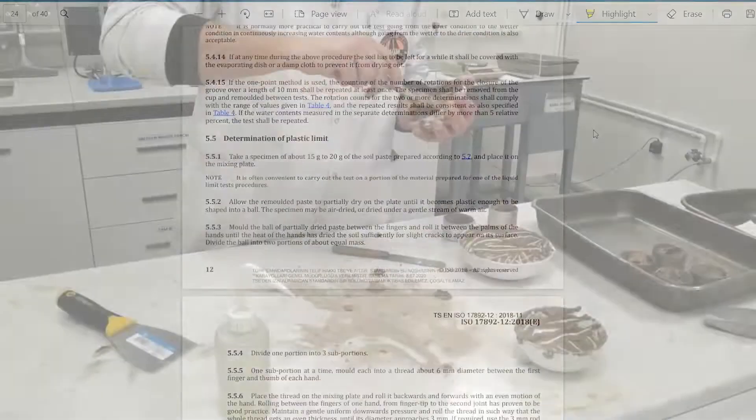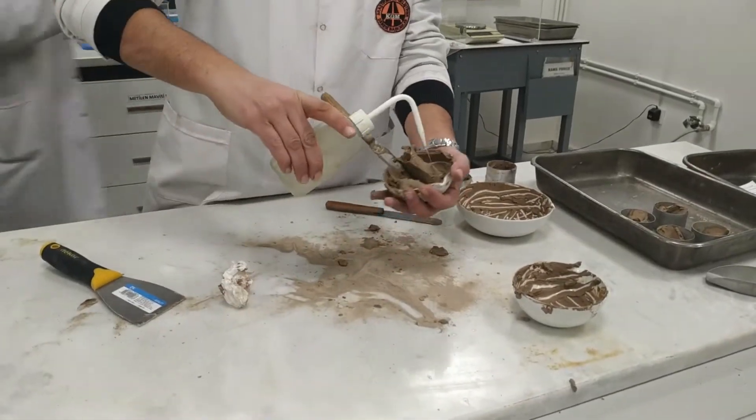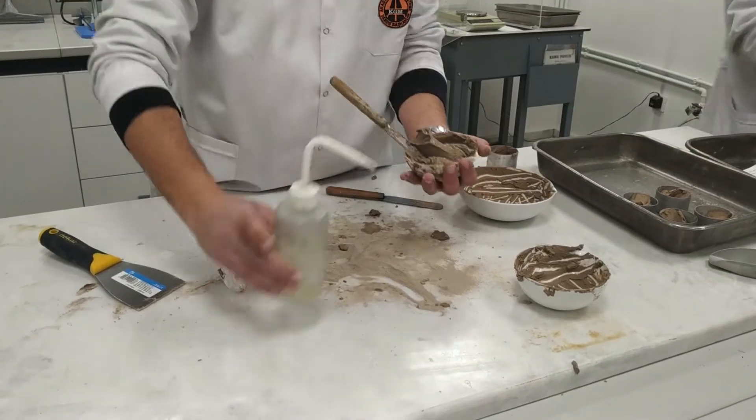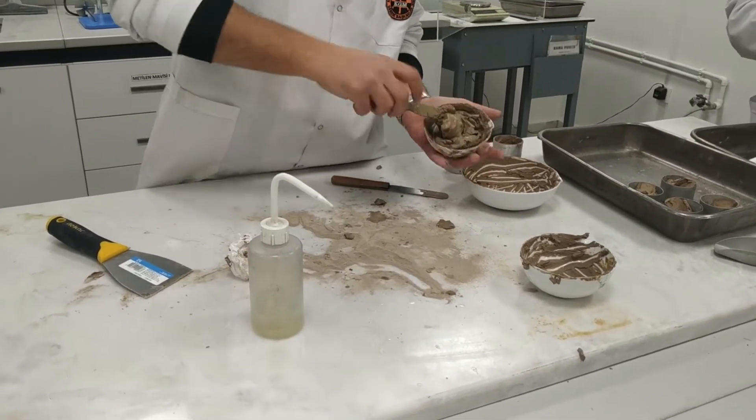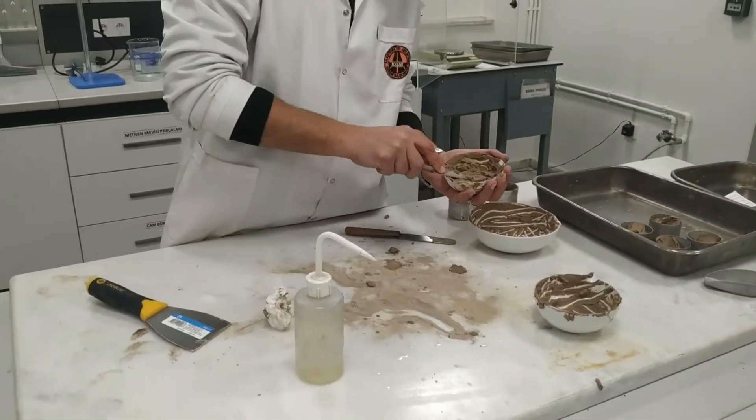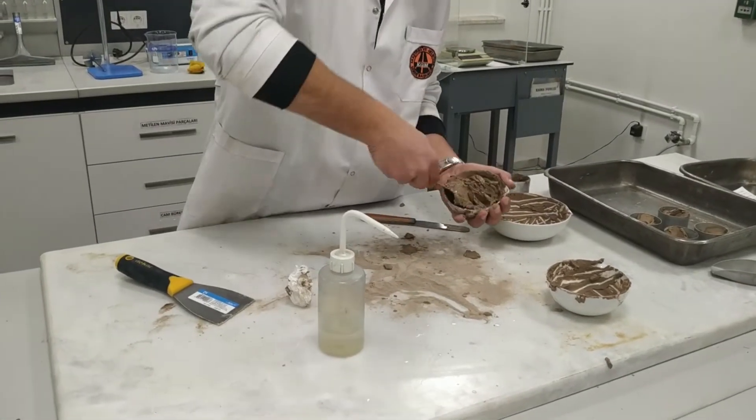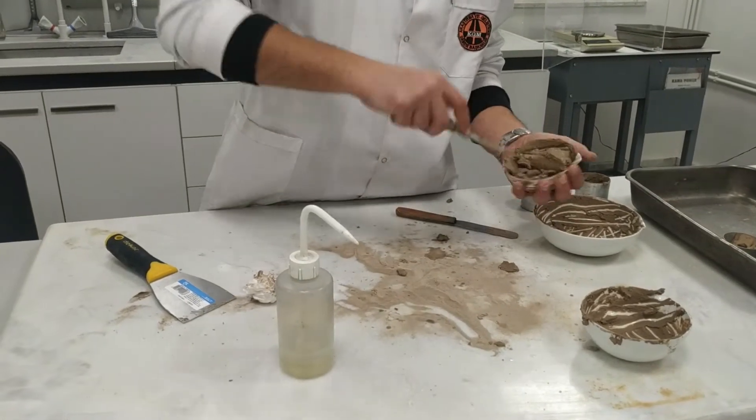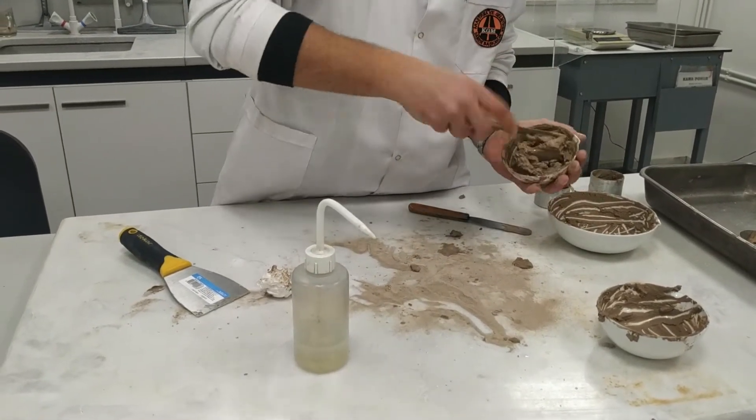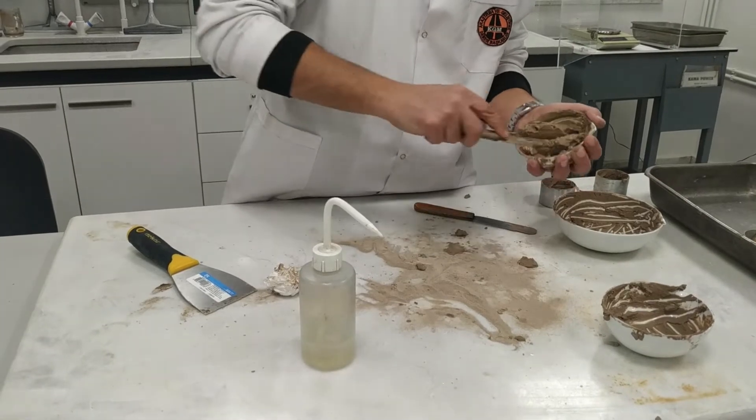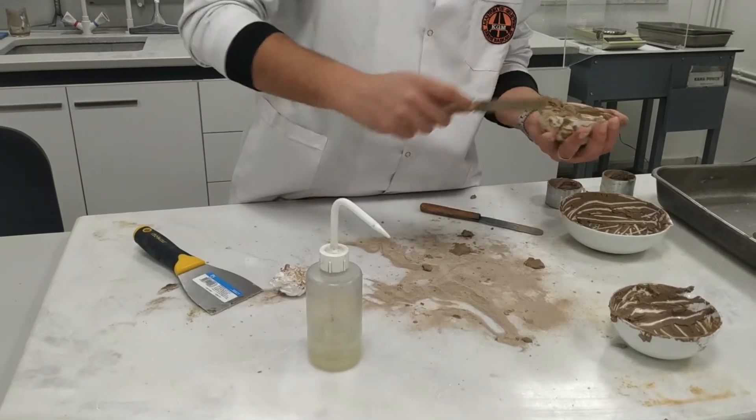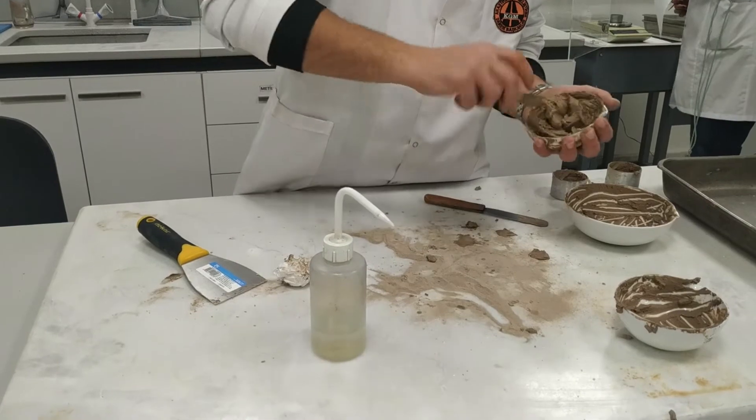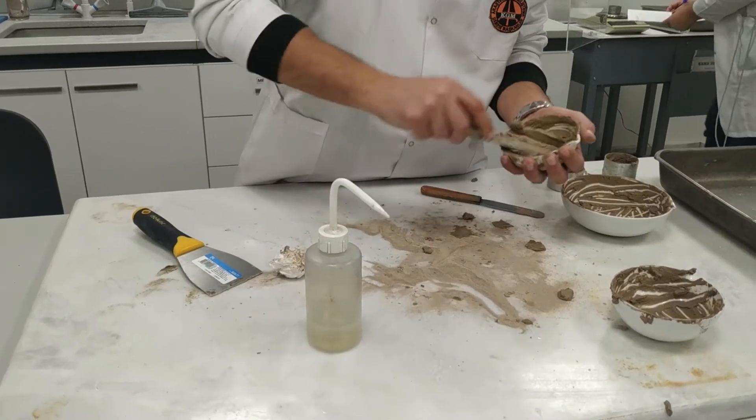The equipment needed for conducting the fall cone test is a fall cone device equipped with a calibrated cone and sample dish, several moisture cans, a squeeze bottle, a porcelain pot bowl for mixing the soil, and a stopwatch capable of reading to the nearest one second if the fall cone device does not have its own timer.